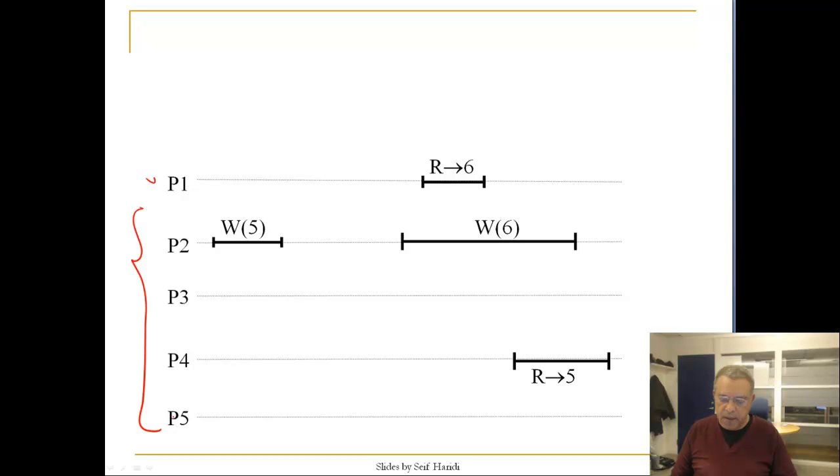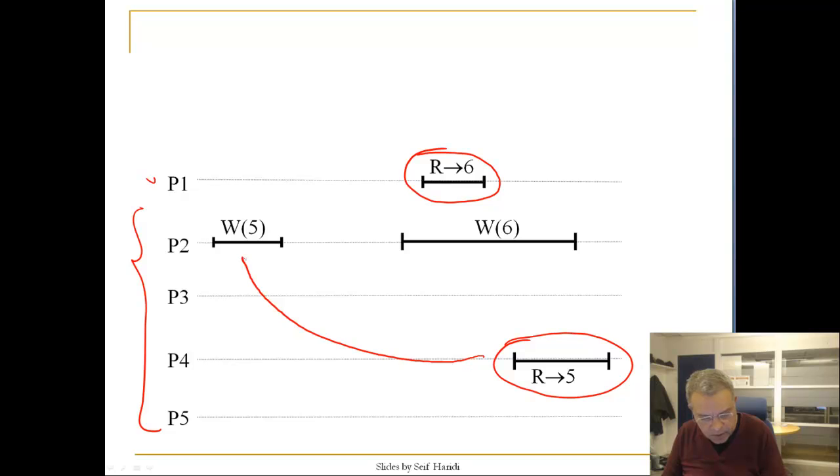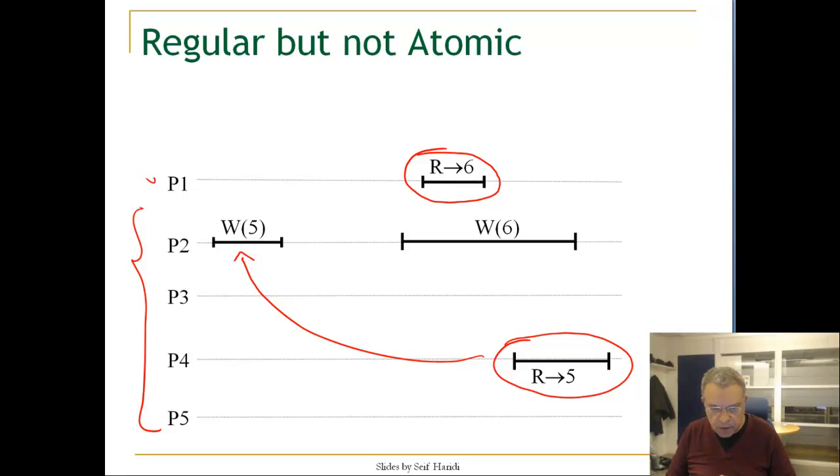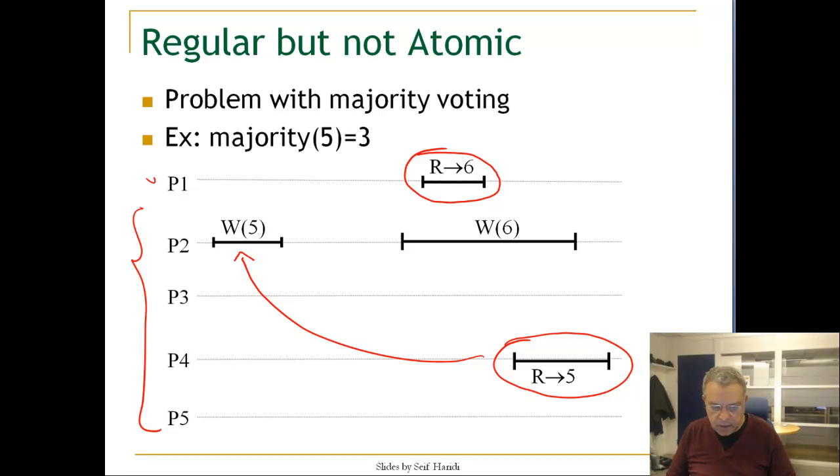What is the problem with this execution? The problem is that this read is happening after this read, and it's returning an old value written here. So that cannot be correct. It's actually regular but not atomic. There is a problem here with majority voting. Remember that the majority, we have five nodes, we have three here. Let's see what's going to happen.